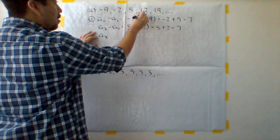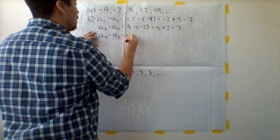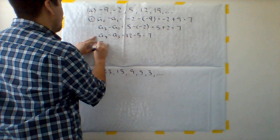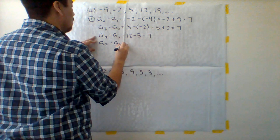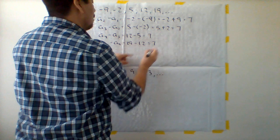Now I'm going to try a4, the fourth term, minus a3, the third term which in this case is 12 minus 5. Hey look at that, we get 7 yet again. A5, now we're doing the last one, the fifth term minus the fourth term, so 19 minus 12 which gets a 7.